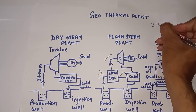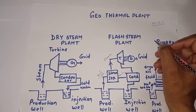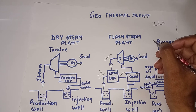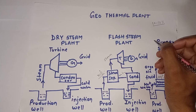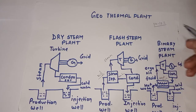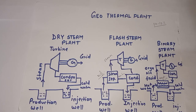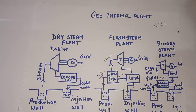These are the three types of geothermal plants. Normally, geothermal plant efficiency is 10 to 12 percent, and a key limitation is that they can only be used where hot steam and water are available from the subsurface. However, the advantages include a short construction period, high reliability, very low maintenance, and no gas emissions, making geothermal plants eco-friendly.